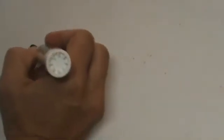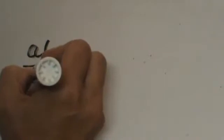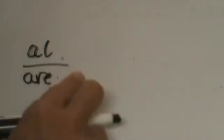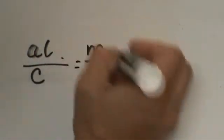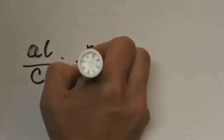We take the arc length if we know it and we put it over the circumference, because arc is part of the circumference. Then we put our measure of the angle over 360.